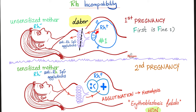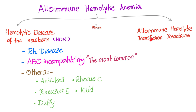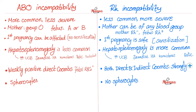During the first pregnancy, the D antigens leave the baby's blood and go to the mother via the placenta. The mother becomes sensitized and develops anti-D antibodies because she has never seen those D antigens before. In the second pregnancy and all subsequent ones, these antibodies pass from the mother to the baby via the placenta and destroy the baby's blood — we call this hemolytic disease of the newborn, or erythroblastosis fetalis, under the umbrella of alloimmune hemolytic anemia. Here is a comparison table between ABO and RH incompatibilities — please pause and review.